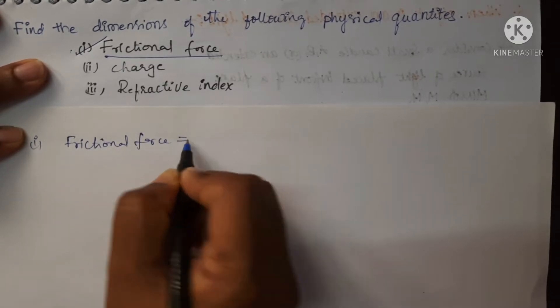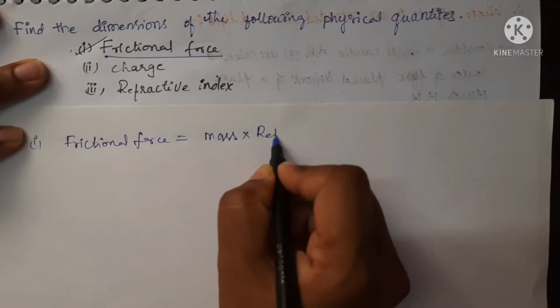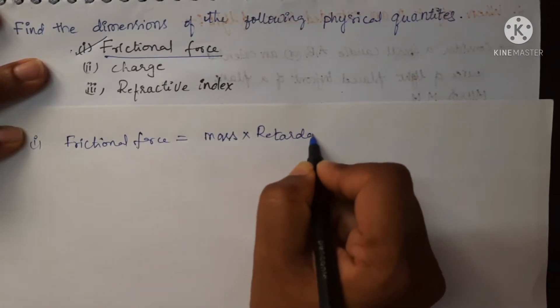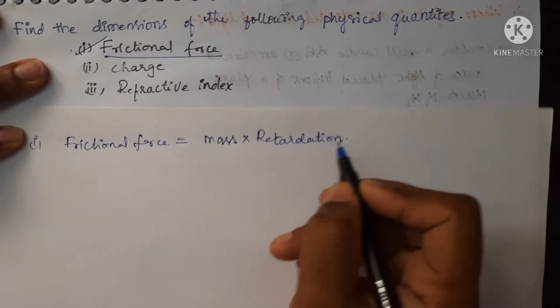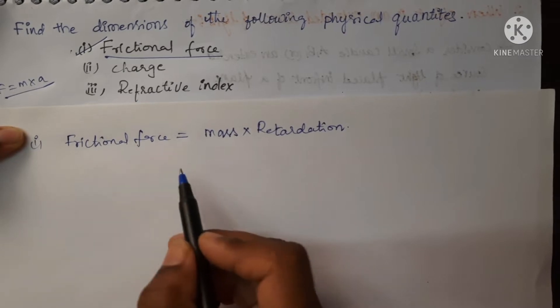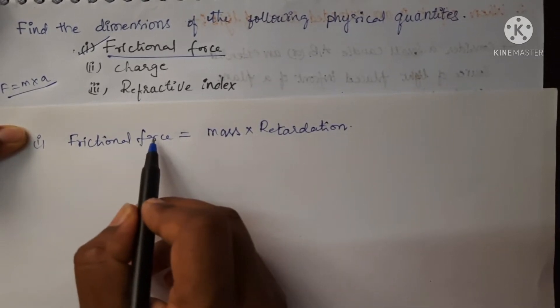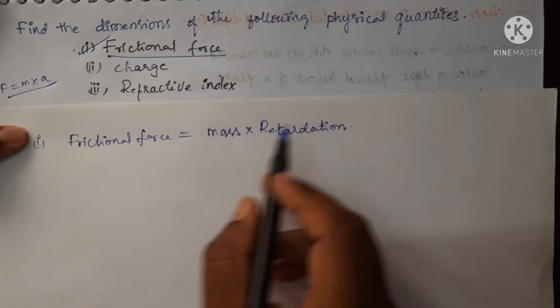Frictional force equals mass multiplied by retardation. Actually, the formula for force is mass multiplied by acceleration, but here this is a frictional force, so we have to consider the retardation.